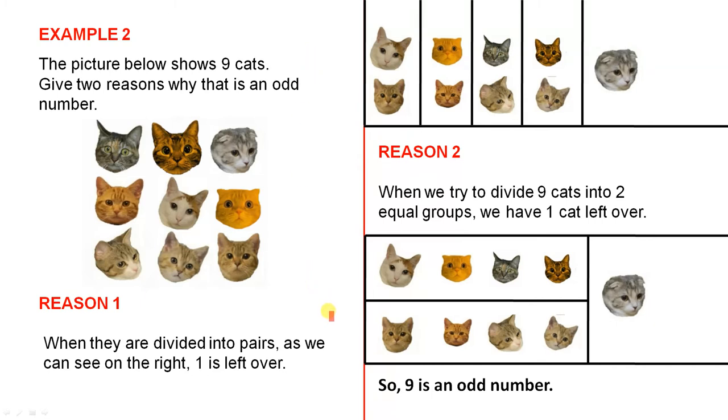Reason 1. When they are divided into pairs, as we can see on the right, one is left over. So here is one pair, another pair, another pair, another pair and look at this poor little cat here. That's by itself. One left over. So that proves that nine is odd.